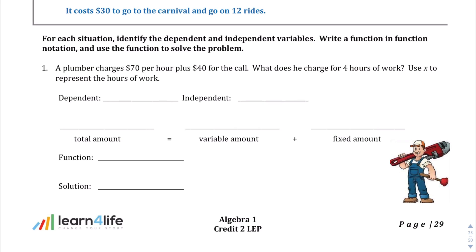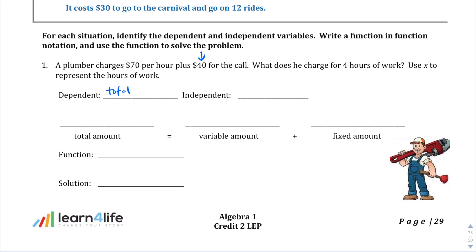Let's go ahead and do question number one. A plumber charges $70 per hour plus $40 for the call. What does he charge for four hours work? Use x to represent hours of work. So here we have an additional thing you should pick up on from the explain part. We have what's called a constant or initial value, because when the plumber shows up at your house, even if he's worked zero hours, just for being there he starts off charging $40.